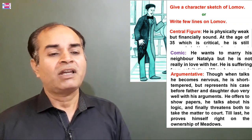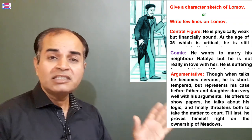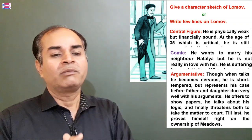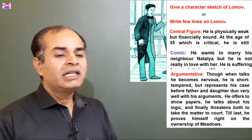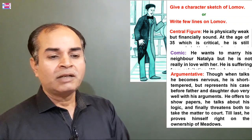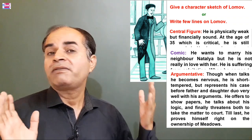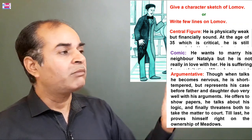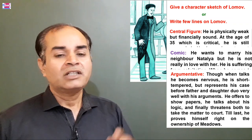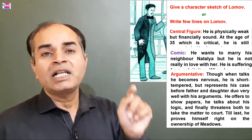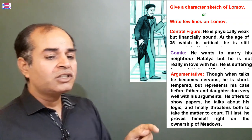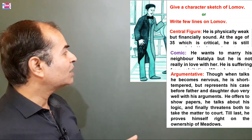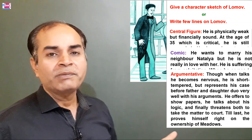He represents his case before the father and daughter duo very well with his arguments. He offers to show papers — 'plan dikha dunga main aapko.' He talks about his logic, apna tark deta hai. He finally even threatens both to take the matter to court, and till the last he proves himself right on the ownership of the Meadows.